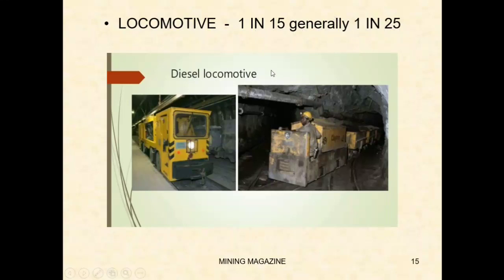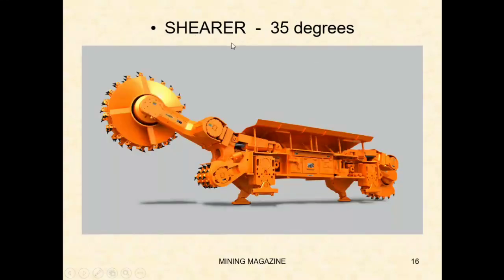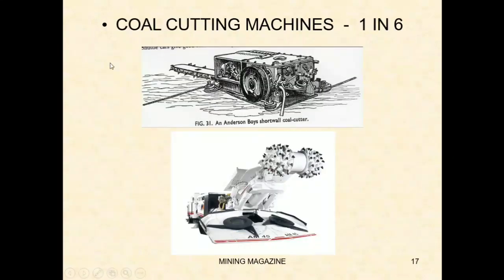The grade limit for locomotives is 1 in 25, which allows easy movement. The shearer operates at 35 degrees inclination. Next, coal cutting machines — the arc wall cutter and the AM50 — these coal cutting machines have a gradient limit of 1 in 6.